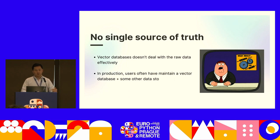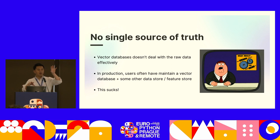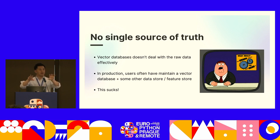Number two is that there's no single source of truth. Vector databases don't deal effectively with raw data and metadata. In production for large-scale use cases, users often have to maintain multiple data stores and engines — one vector store, plus one full-text search index, plus a raw data store. You have to hope your data pipeline updates all of those things at the same time so that a single request can be threaded through all three successfully.